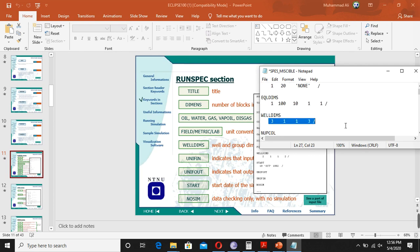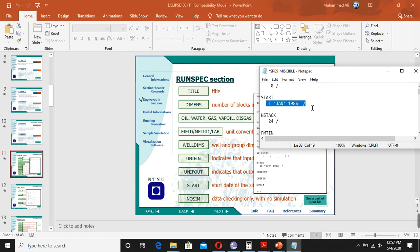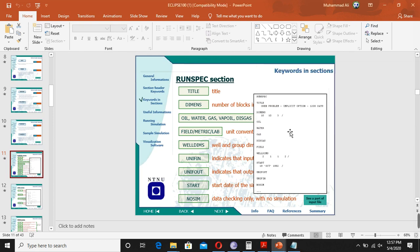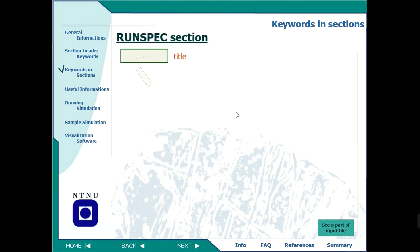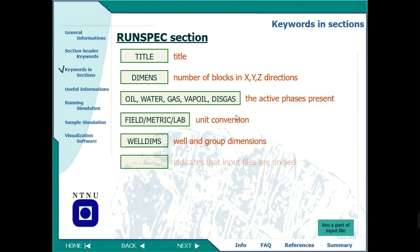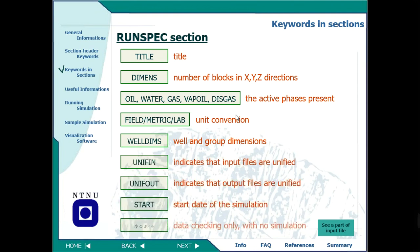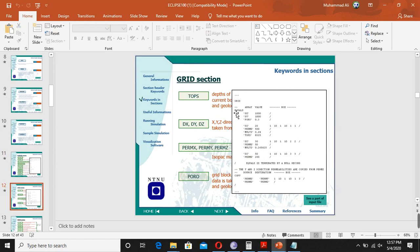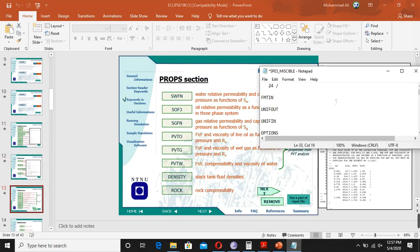Then we have the well dimensions, which tells us how many wells you are going to put in this simulation — for example three wells — and how many groups they are in. We also have to put the start date: when the simulation is going to start. It also indicates what kind of output you need, the title, number of blocks, oil, water, and gas outputs, and whether you are doing data checking only with no simulation.